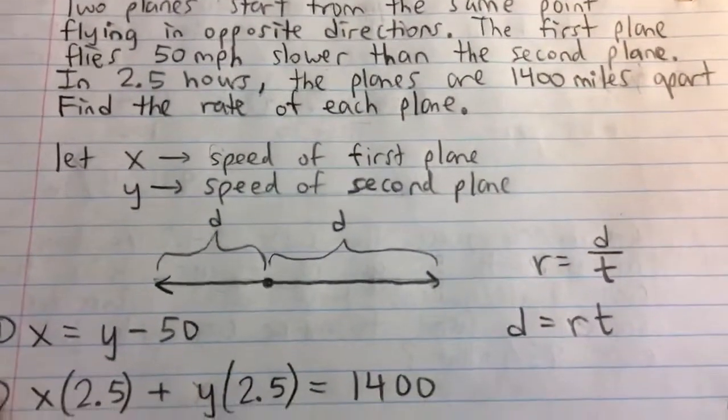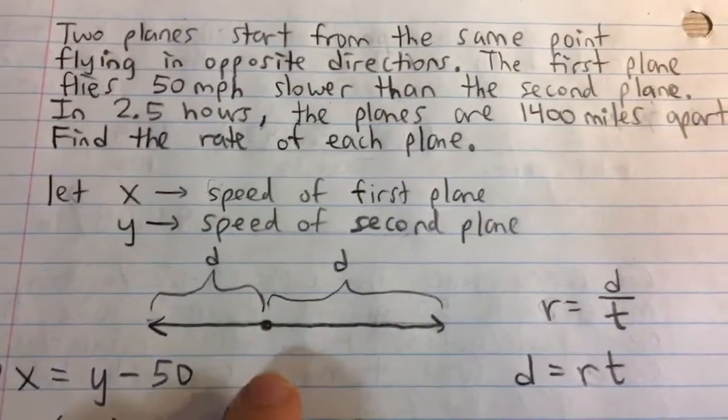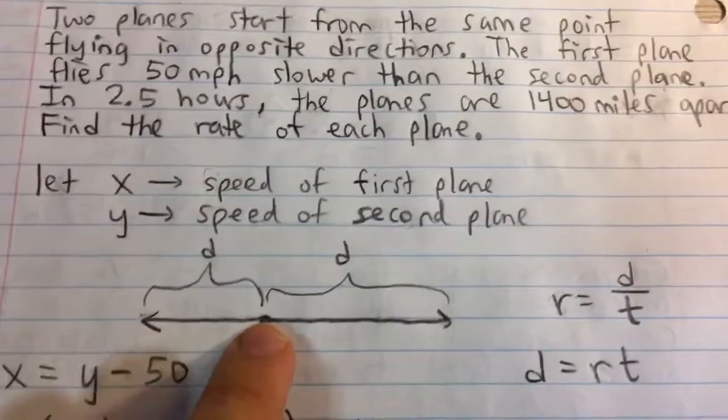Second, let's take a look at the situation. The 1,400 miles apart means that the first plane travels from here to there. The second plane travels from here to there.